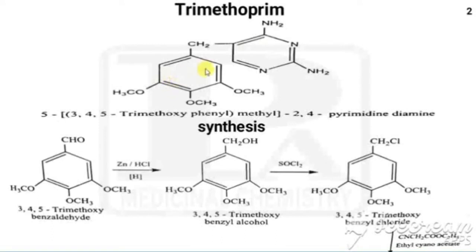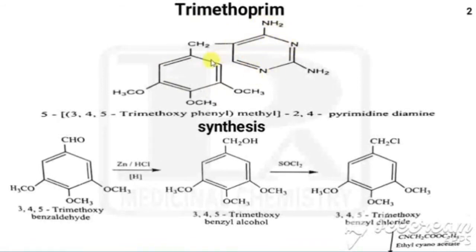The chemical name of trimethoprim requires careful numbering. For pyrimidine the positions are numbered one through six, and for the phenyl ring similarly one through six. Pyrimidine is chosen as the parent, so everything is attached at the fifth position of pyrimidine. That gives us: 5-[(3,4,5-trimethoxyphenyl)methyl]-2,4-diaminopyrimidine as the chemical name of trimethoprim.